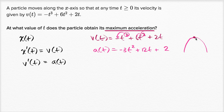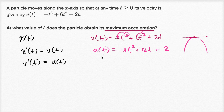How do we figure out that maximum value? The maximum will happen when the slope of the tangent line is equal to zero. We can also verify it is concave downward at that point using the second derivative test by showing that the second derivative is negative there. So let's look at the first and second derivatives of our acceleration function.